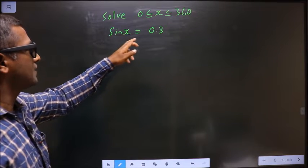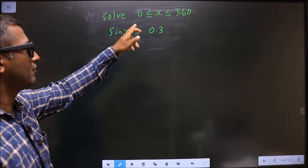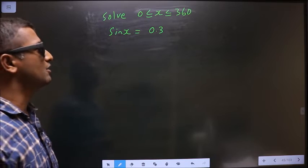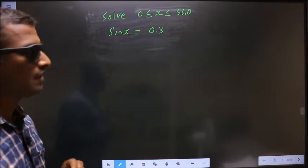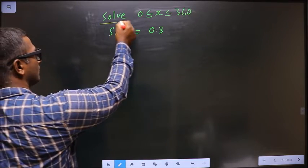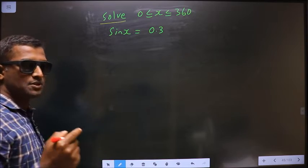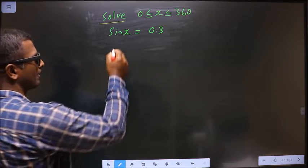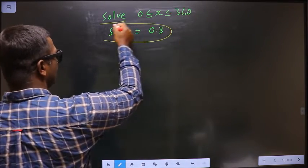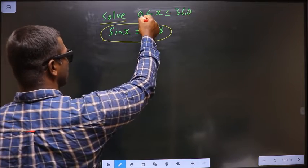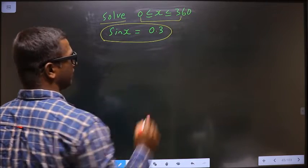Solve sin x equals 0.3 where x lies between 0 to 360 degrees. You need to find the values for x satisfying this equation within this interval.